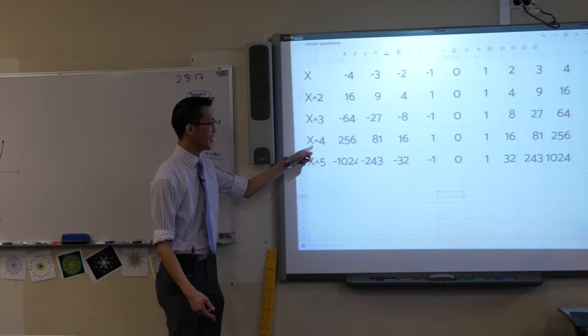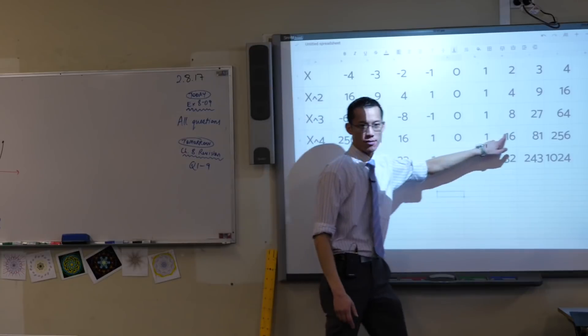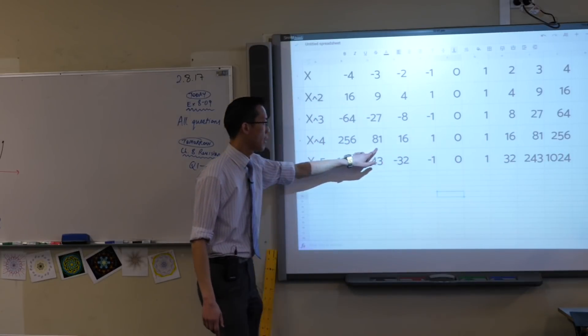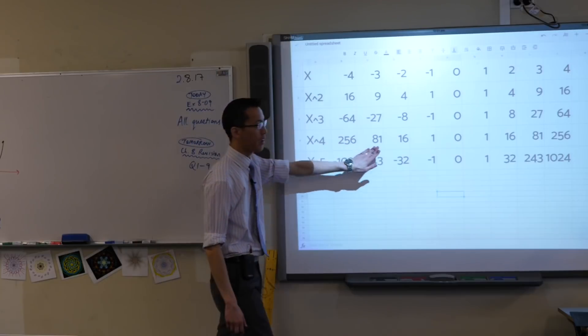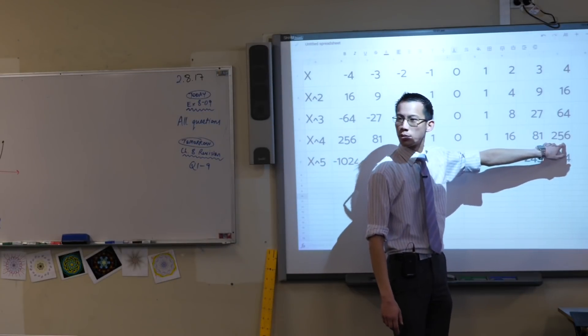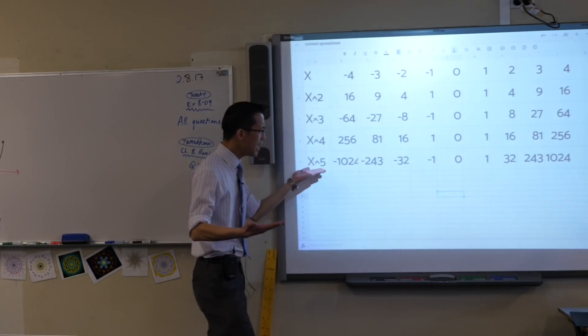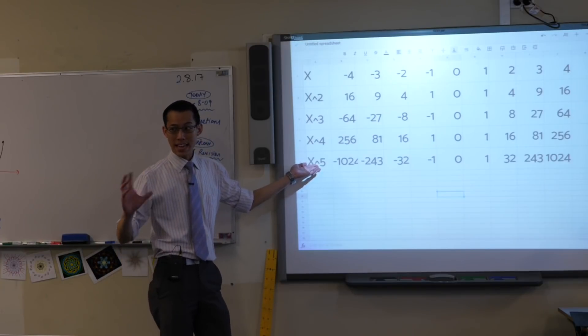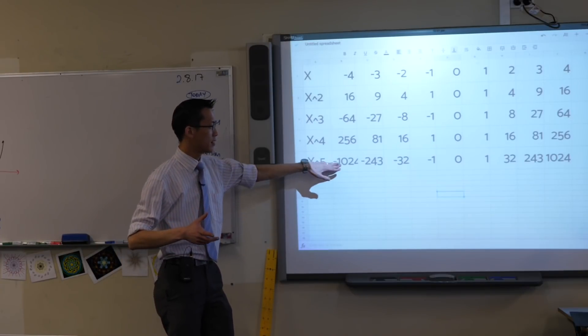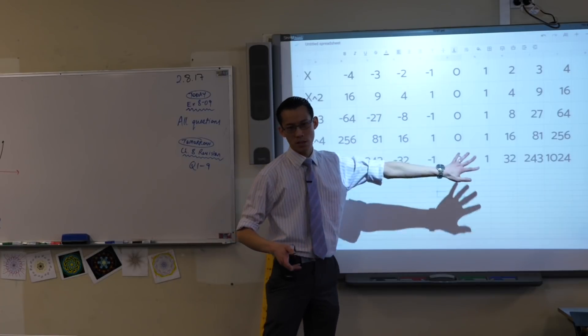As we predicted, in this x to the 4 row, all the numbers are positive. And in fact you've got the same number here that appears over on the opposite side. When you've got an odd power, same deal, but you've got negatives on this side, positives on that side.